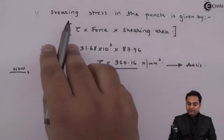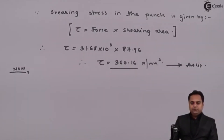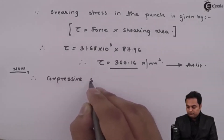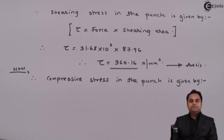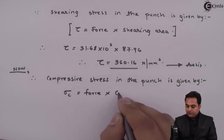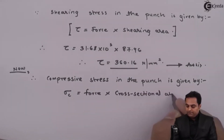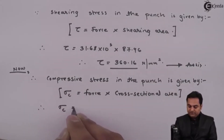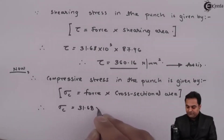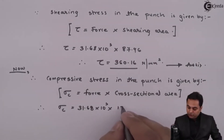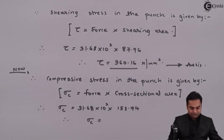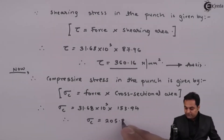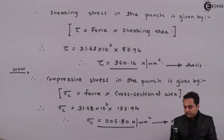After finding the shearing stress, we calculate the compressive stress on the punch. Compressive stress sigma_c = Force / Cross-sectional area = 31.68 × 10³ divided by 153.94 N/mm², which comes out to be 205.80 N/mm². This is the second answer.